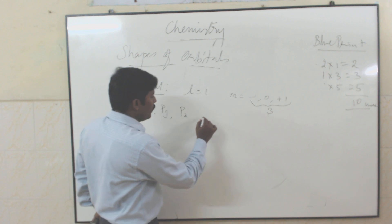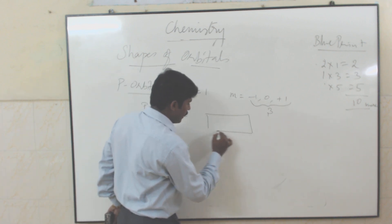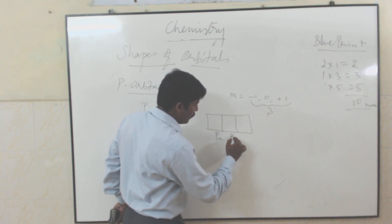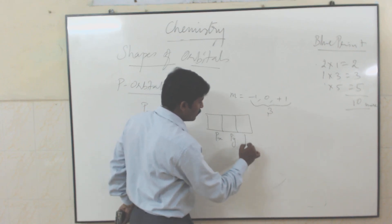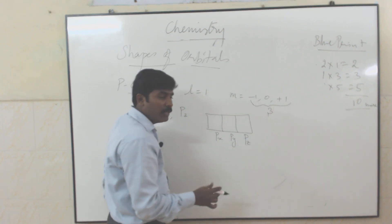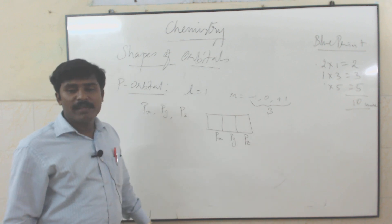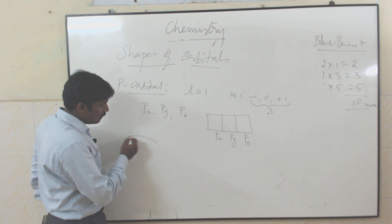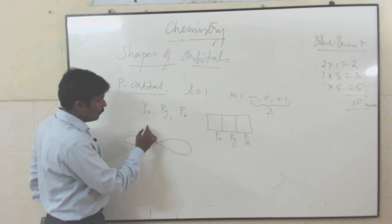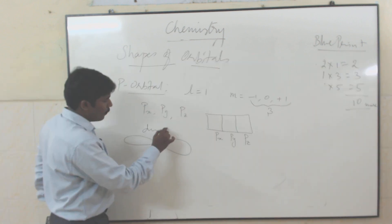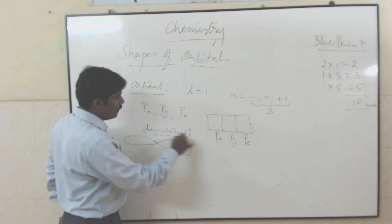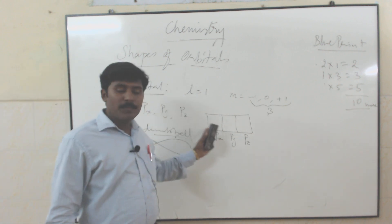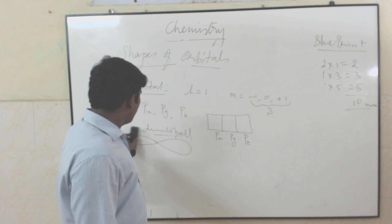The p orbital splits into 3 types: px, py, and pz. Each and every orbital can hold a maximum of 2 electrons. The shape of the p orbital is dumbbell shape, and there are 3 of them — px, py, pz.